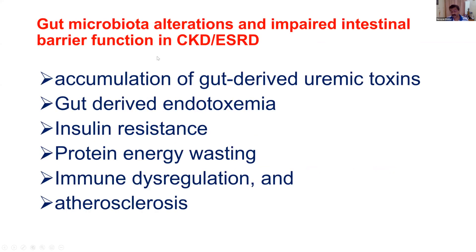Gut microbiota alters and impairs the intestinal barrier function in CKD and ESRD patients, including those on dialysis. If there is renal failure, there will be accumulation of gut-derived uremic toxins. Gut-derived endotoxin levels become very high in patients with CKD. There is a high chance of insulin resistance, and protein-energy wasting is very well known in CKD and ESRD patients, particularly those on dialysis.